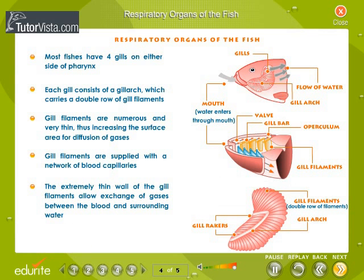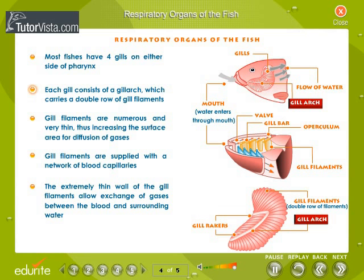The respiratory organs of the fish. Observe the respiratory organs of fish carefully. Most fishes have four gills on either side of their pharynx. Each gill consists of a gill arch, which carries a double row of gill filaments. Gill filaments are numerous and very thin, thus increasing the surface area for diffusion of gases.